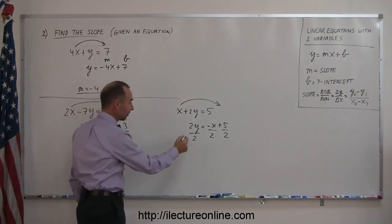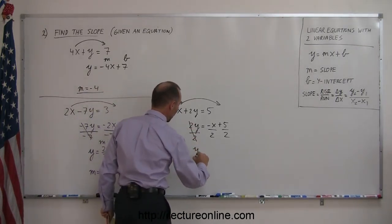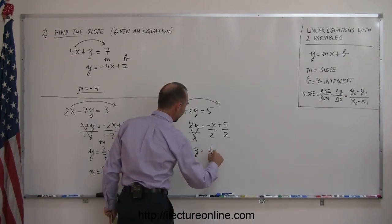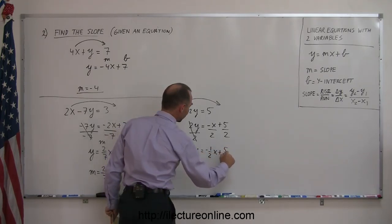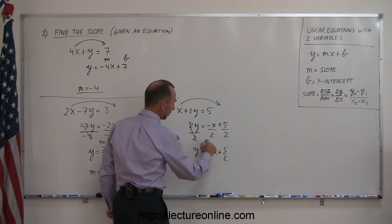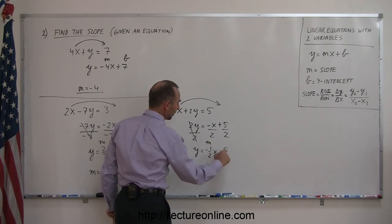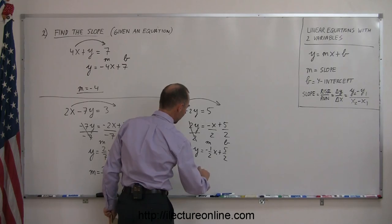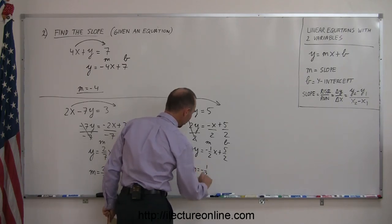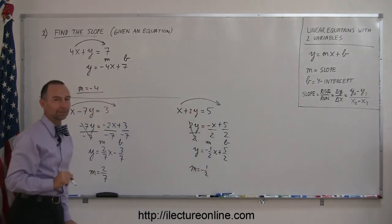Now the 2's cancel out, and you end up with y equals negative 1/2 x plus 5 over 2. The number in front of the x, that's the slope. The number here by itself is the y-intercept, so m equals minus 1/2 is the slope of this equation right here.